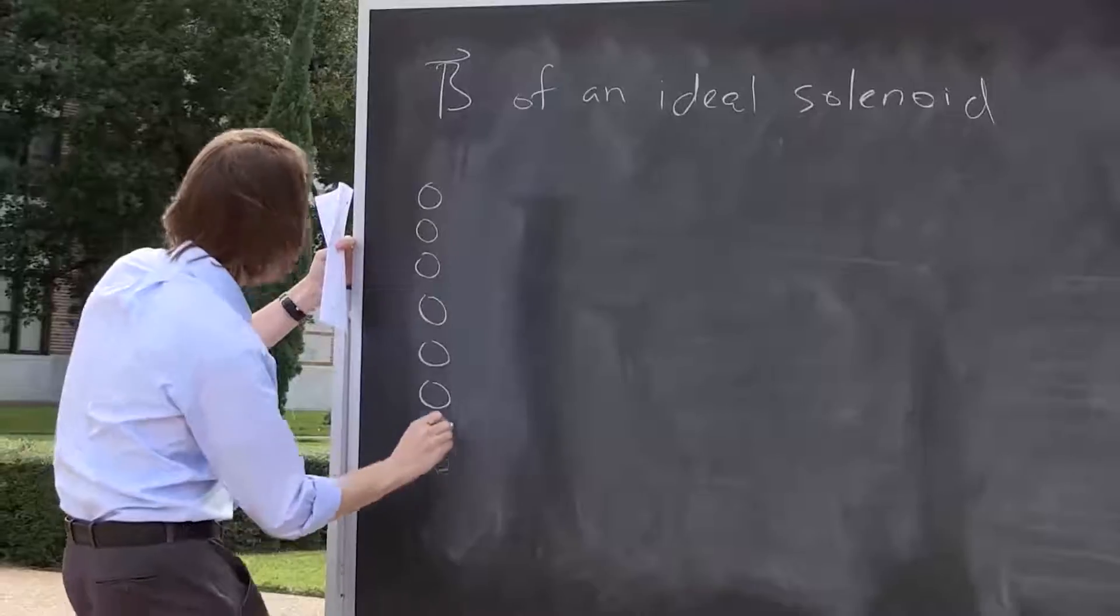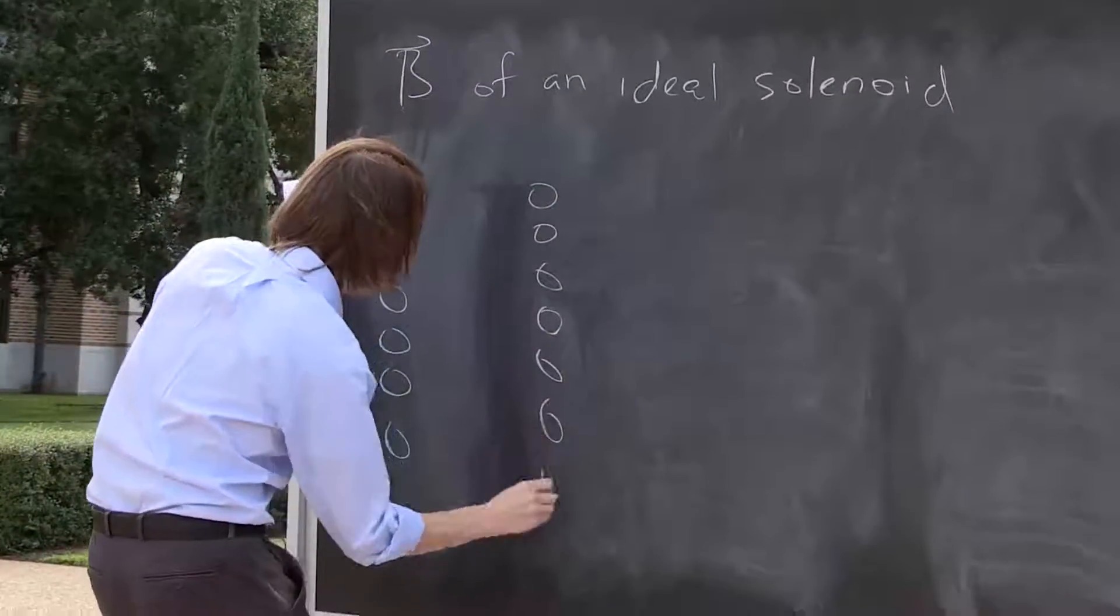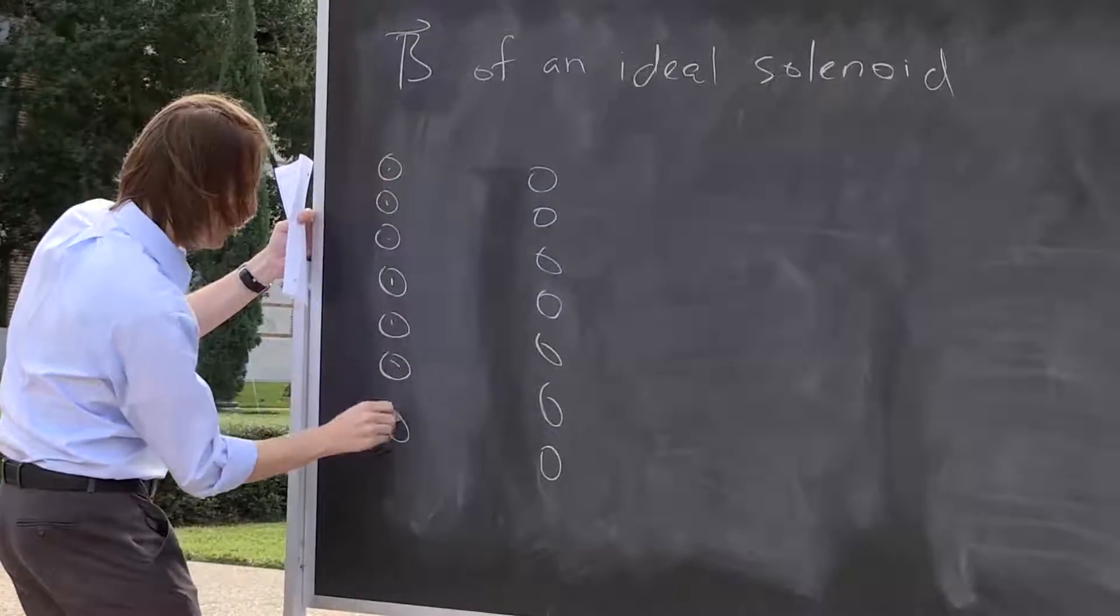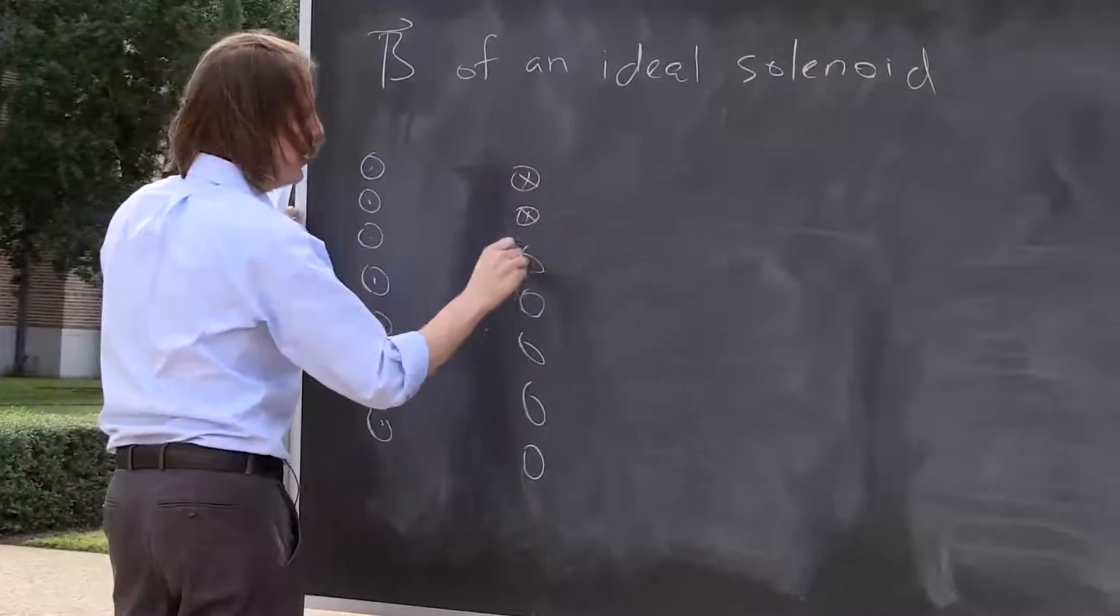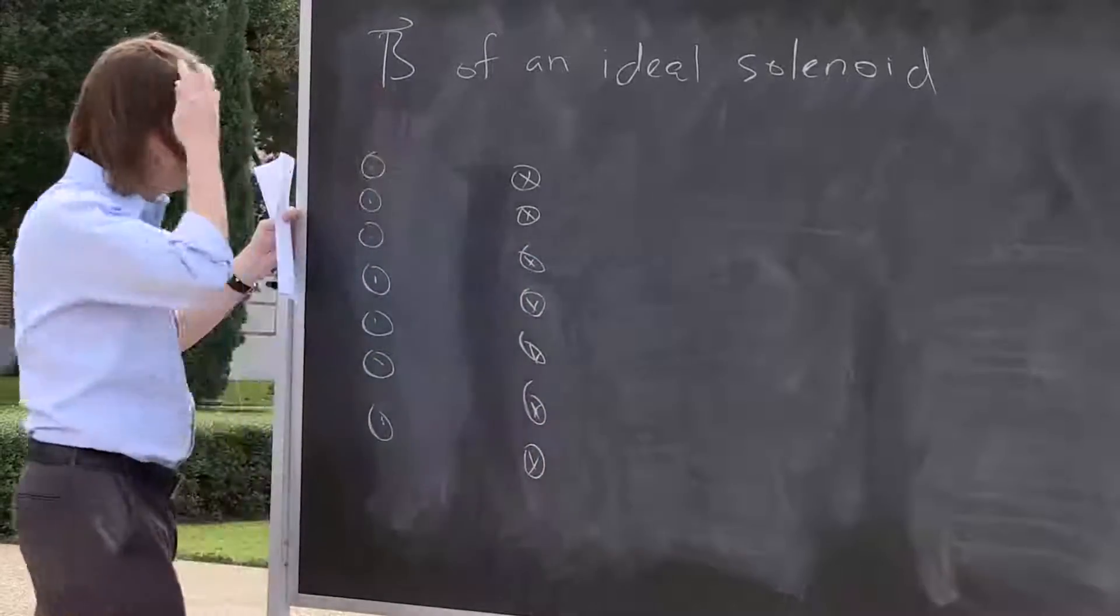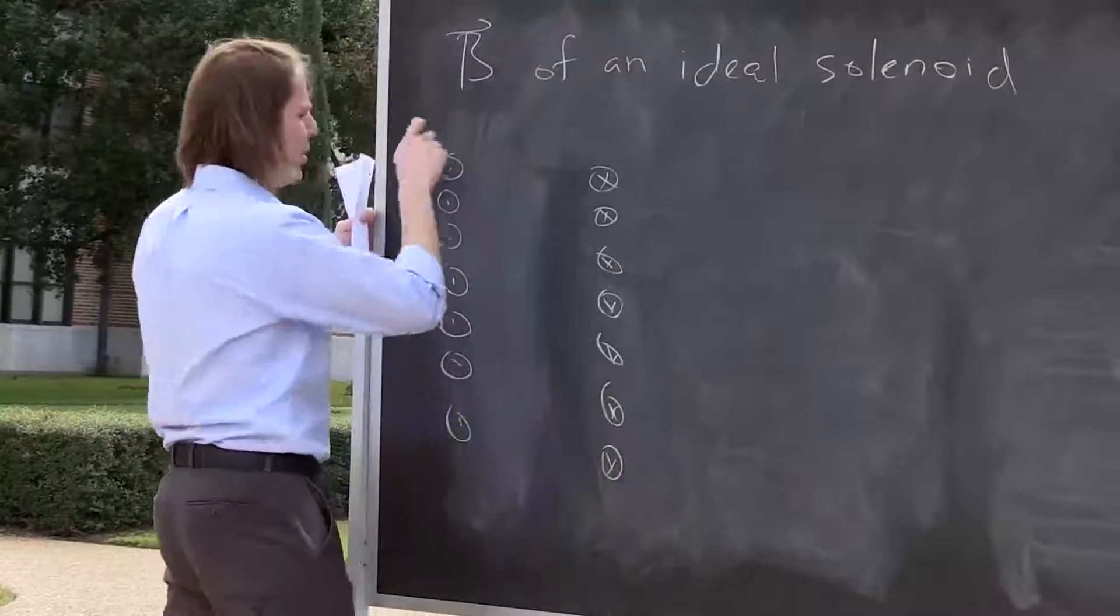We'll have it come out this way. Current's coming out on this side, going in on this side. So the current is going in and then coming out, current I.